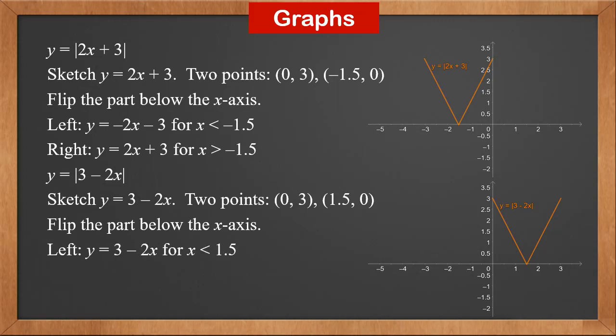The left part is y = 3 − 2x for x less than 1.5. The right part is flipped up, so y values are negated: it's y = 2x − 3 for x greater than 1.5.